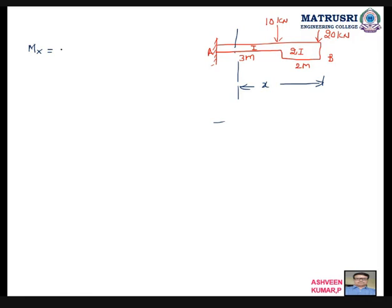So Mx is equal to minus 20x, minus 20x, understood? Minus 20x. This is from where to where?